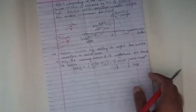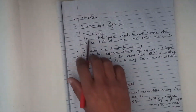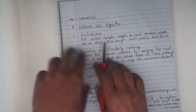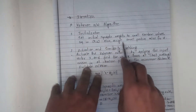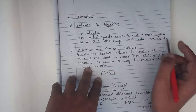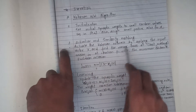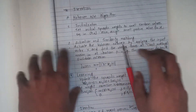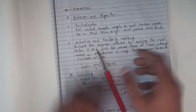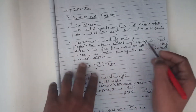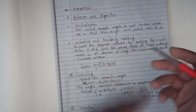This is the algorithm. Initialization: we set initial synaptic weights to small random values, assigning positive values. We also define a learning rate. Activation and similarity matching: if you want to know the winning neuron, activate by applying the input vector and find the winner-takes-all best matching neuron.